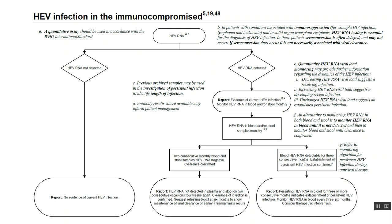If blood HIV RNA remains detectable for three consecutive months, persistent HIV infection is confirmed. We can report that persisting HIV RNA in blood for three or more consecutive months indicates establishment of persistent HIV infection. In that case, monitor HIV RNA in blood every three to six months and consider therapeutic intervention.